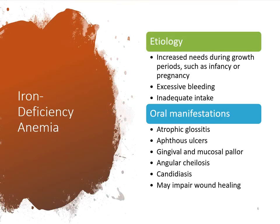The first type is iron deficiency anemia. The etiology includes increased needs during growth periods such as infancy or pregnancy, excessive bleeding — for example, women with heavy menstrual cycles lose iron and need to eat more — and inadequate intake. Consuming iron with certain foods can also block absorption. Oral manifestations include atrophic glossitis, visible in figure 17.2 on page 331, where the tongue appears very shiny with loss of all papillae.